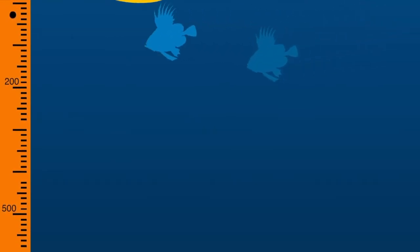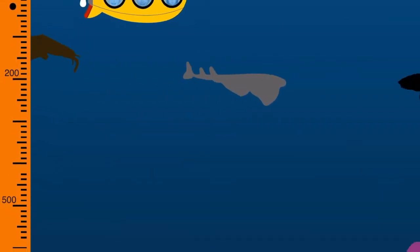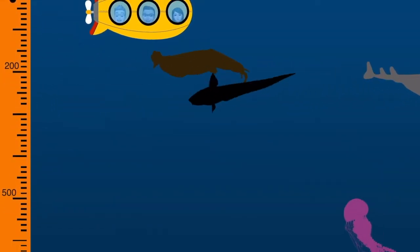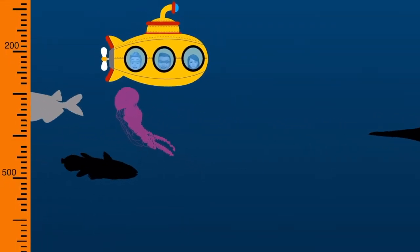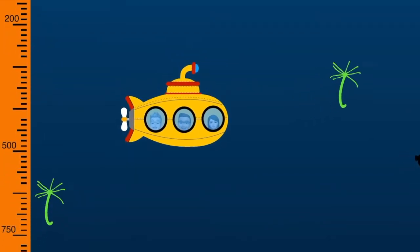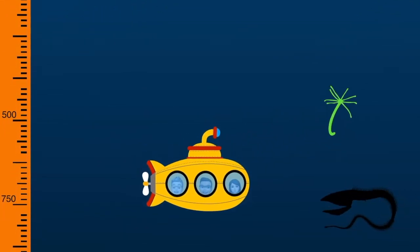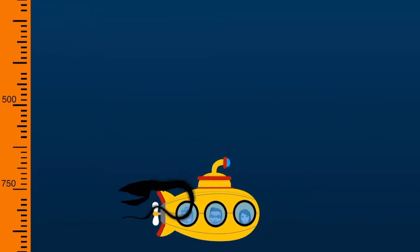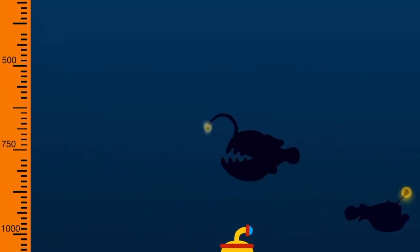We're moving into the twilight level now. There's some really strange things down here — I think that was a cuttlefish, and that's definitely a jellyfish. Some weird green things just zoomed past us, and there's some fish with weird lights attached to their heads.